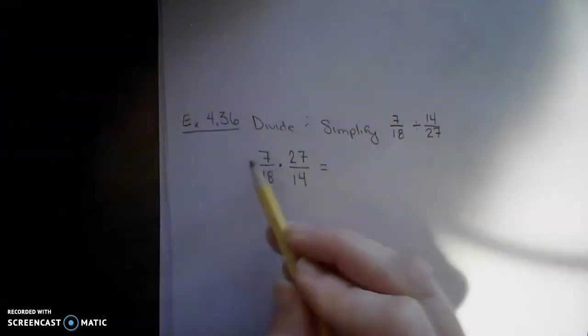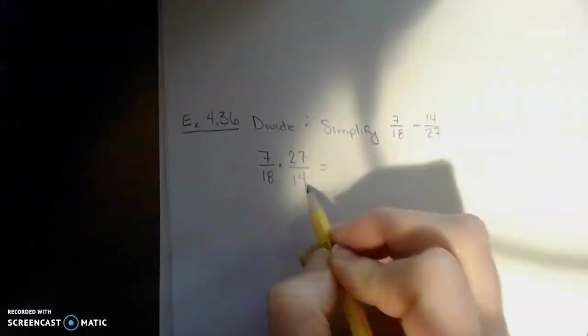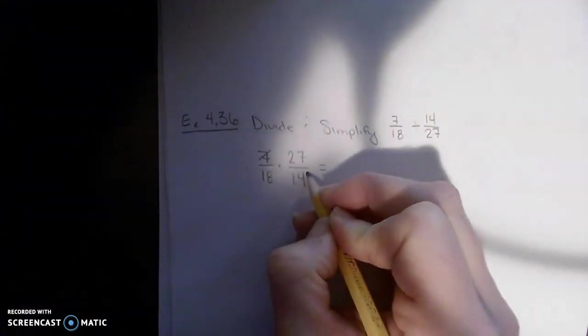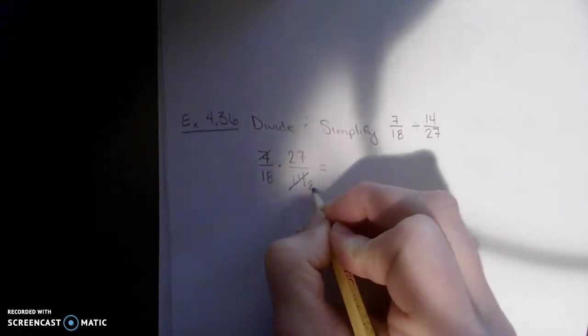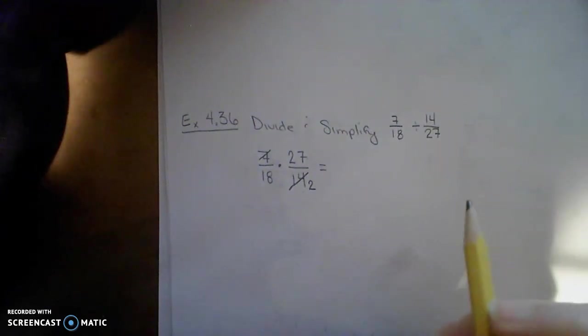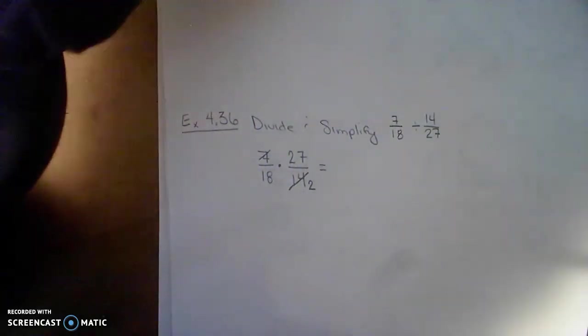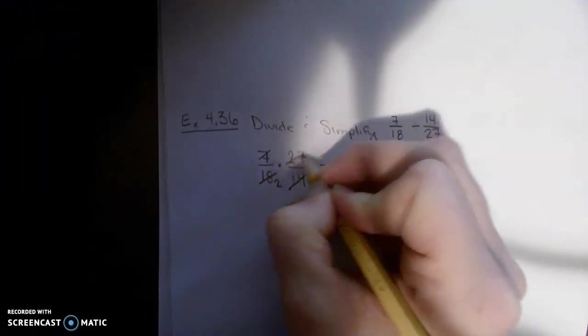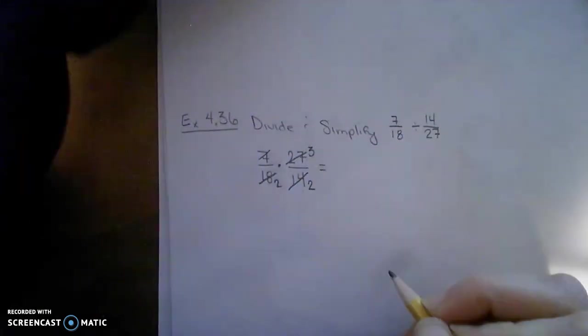Between 7 and 14, do they have anything in common? Yes, they have a 7. So 7 divided by 7 is 1. 14 divided by 7 is 2. All right, how about 18 and 27? Do they have anything in common, any factors? It turns out they have 9. 18 divided by 9 is 2. 27 divided by 9 is 3.